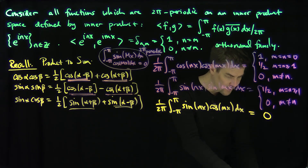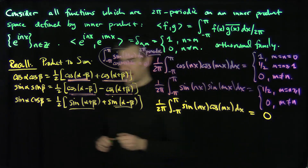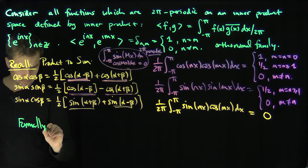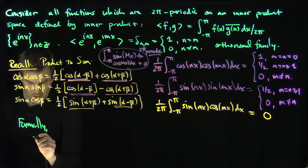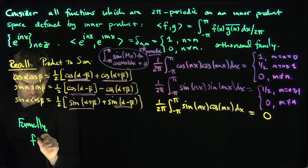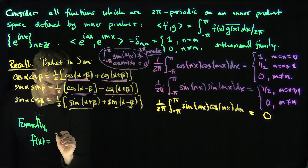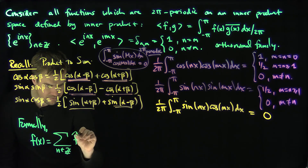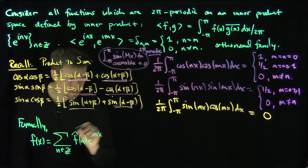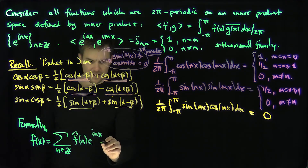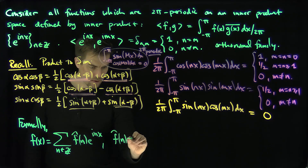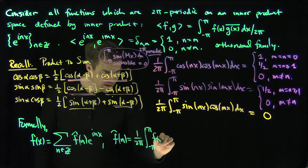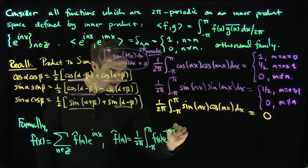These orthogonality relationships from the product-to-sum formulas and 2π-periodicity now allow me to write a formal Fourier series. Formally, any 2π-periodic function f(x) can be written as the sum over n in ℤ of f̂(n) e^(inx), where the Fourier coefficients f̂(n) = (1/2π) times the integral from −π to π of f(x) e^(−inx) dx.